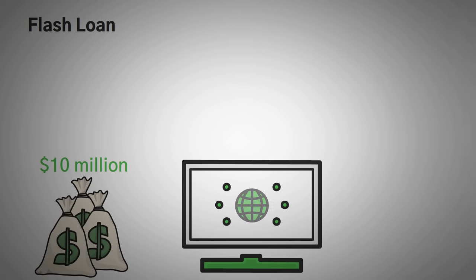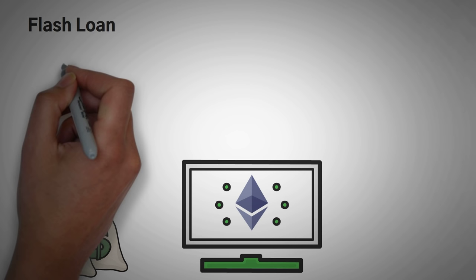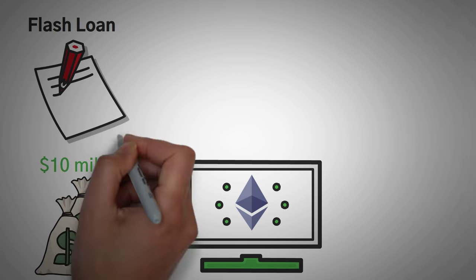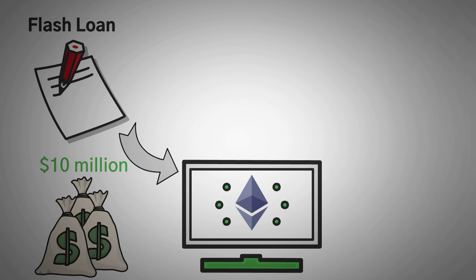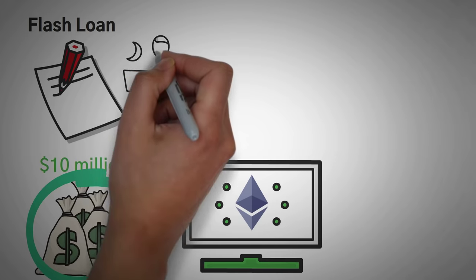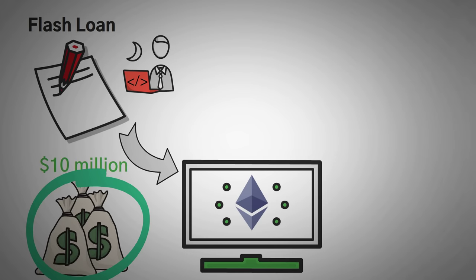What if I told you that you could borrow $10 million with no money down? Well, on the Ethereum network, you absolutely can, but only if you write a smart contract that pays it back in the exact same minute that it is borrowed. That's right, you can borrow millions of dollars to do something for you on the Ethereum network if you know how to code it. So here's the catch. All of the money must be paid back.